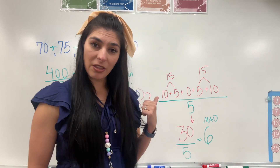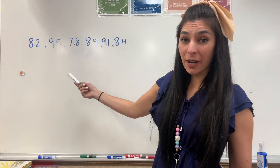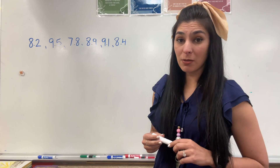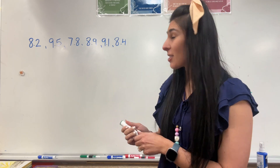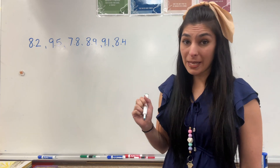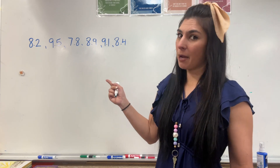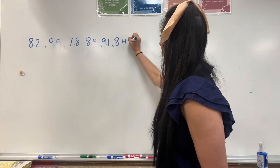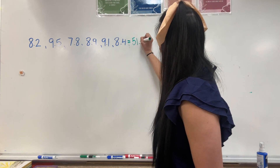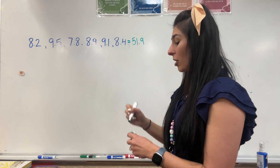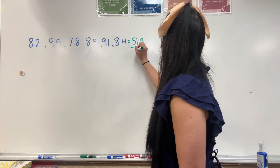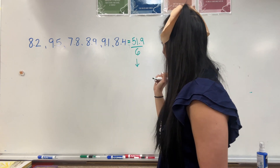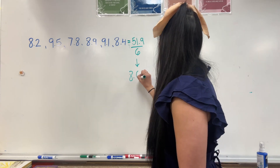Let's go ahead and do another example. We have six friends who ran a mile and tracked their times. We're going to find the mean absolute deviation of these times. Step one, I need to find the mean. So let's add them up and then divide by how many friends — six friends. When we add all these up, we're going to get 51.9. Now there are six numbers, so we're going to divide that by six, which gives us 8.65.